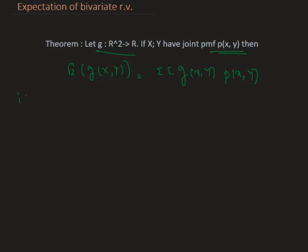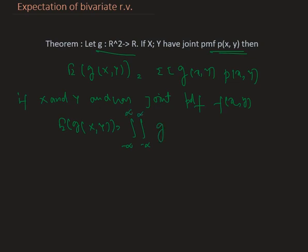And if X and Y are continuous random variables and have joint PDF f(x,y), then we have that expectation of G(X,Y) equals integration G(x,y)f(x,y)dxdy.